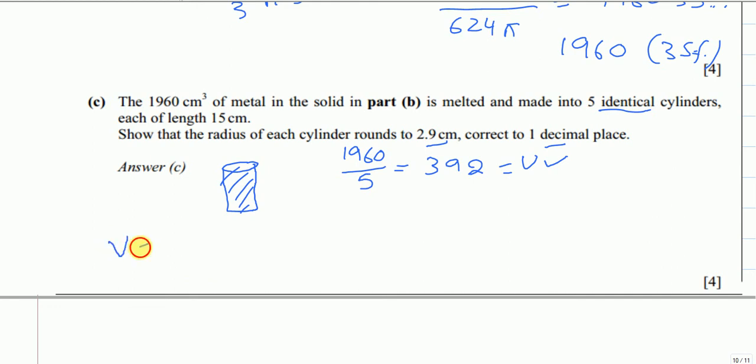Volume of cylinder equals πr²h. We're given the length, which is 15, and we have the volume. The radius is what we're looking for. Substituting: 392 = πr² × 15.